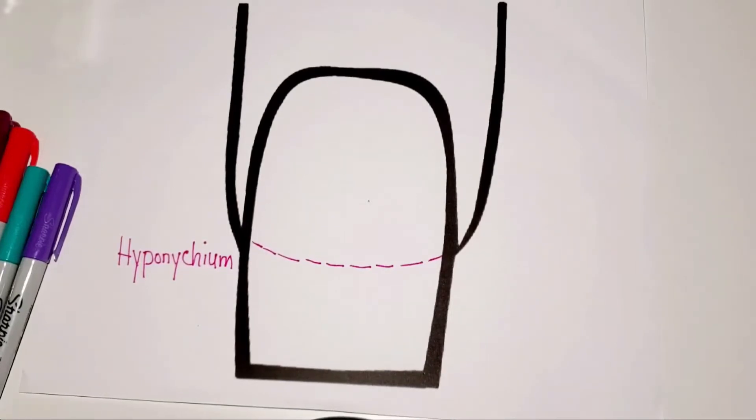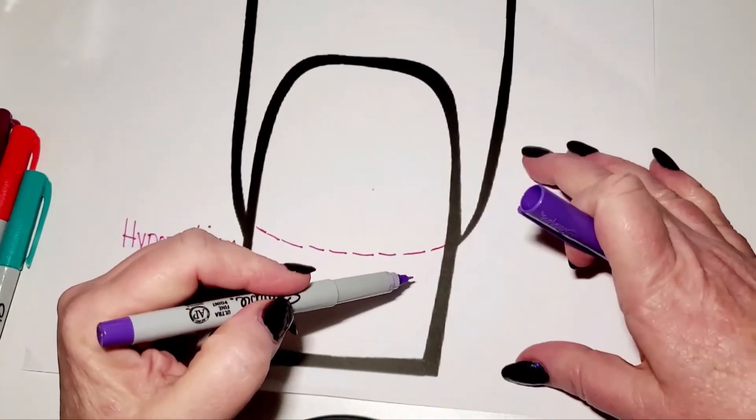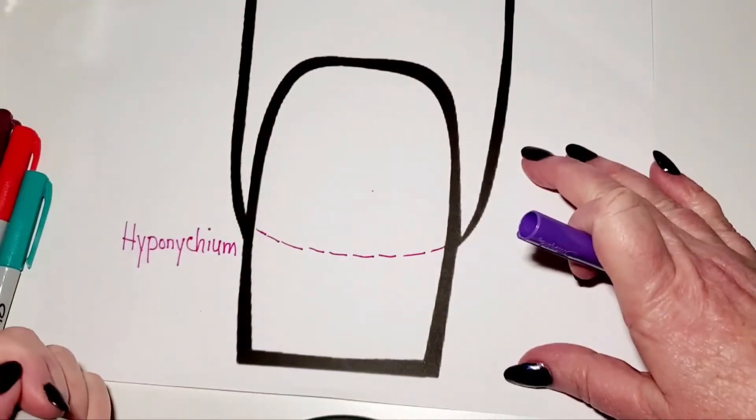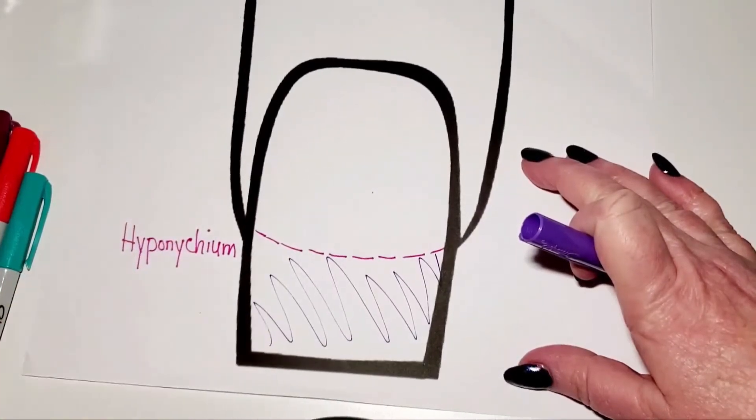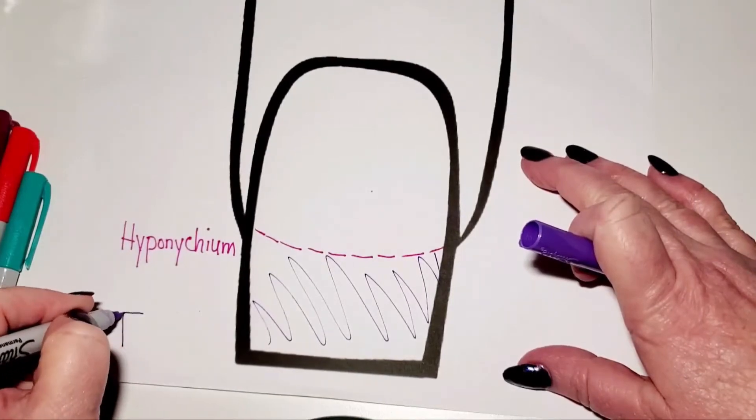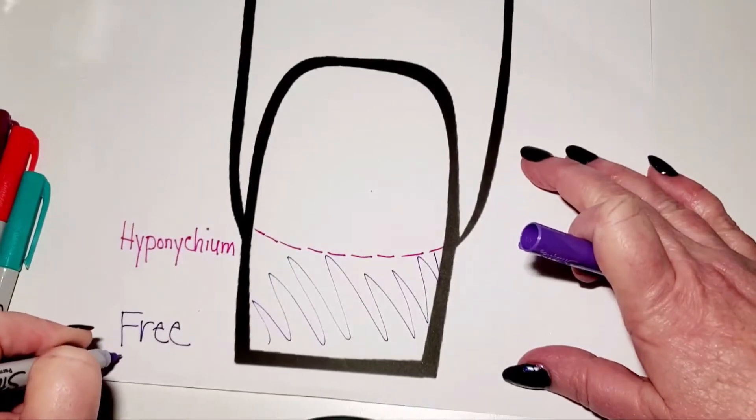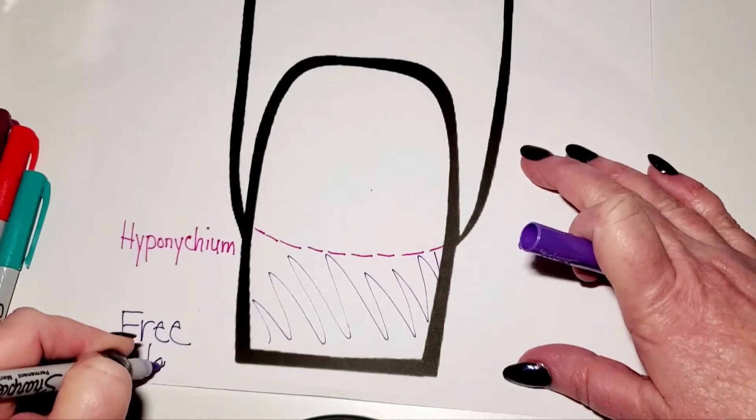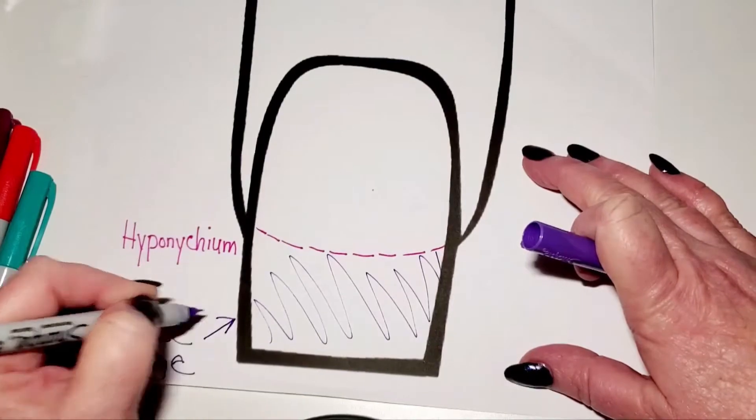The next part of the nail I'm going to tell you about is the free edge. The free edge is the light colored part hanging off of your finger. So this right here is what we consider the free edge, and that's in my favorite color purple.